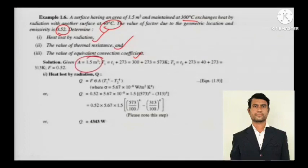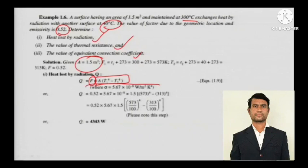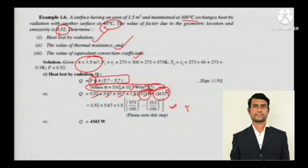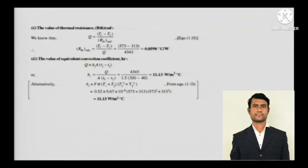The surface factor F is represented as F × σ × A — this is Stefan-Boltzmann law. Sigma (σ) is the Stefan-Boltzmann constant: 5.67 × 10⁻⁸ W/m²K⁴. When solving a radiation numerical, all temperatures must be in Kelvin — do not leave them in degree Celsius, because values are raised to the power of 4 and the result will change. Apply these values to get the answer.